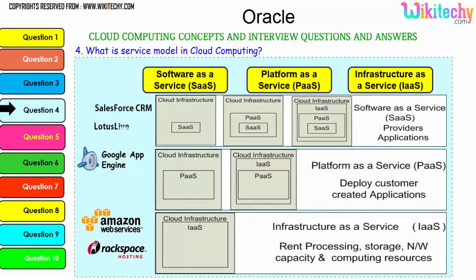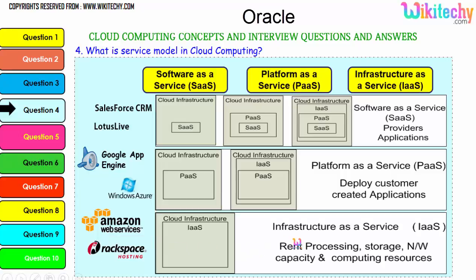In software as a service, the cloud infrastructure software is placed in the operating system and infrastructure. In platform as a service, a platform OS is given on a server and you can put any application or software you want. In infrastructure as a service, a server is given and you can put whatever OS and application you want. Examples for SaaS include Lotus Live and Salesforce CRM; for PaaS, Windows Azure and Google App Engine; for IaaS, Amazon Web Services and Rackspace hosting.